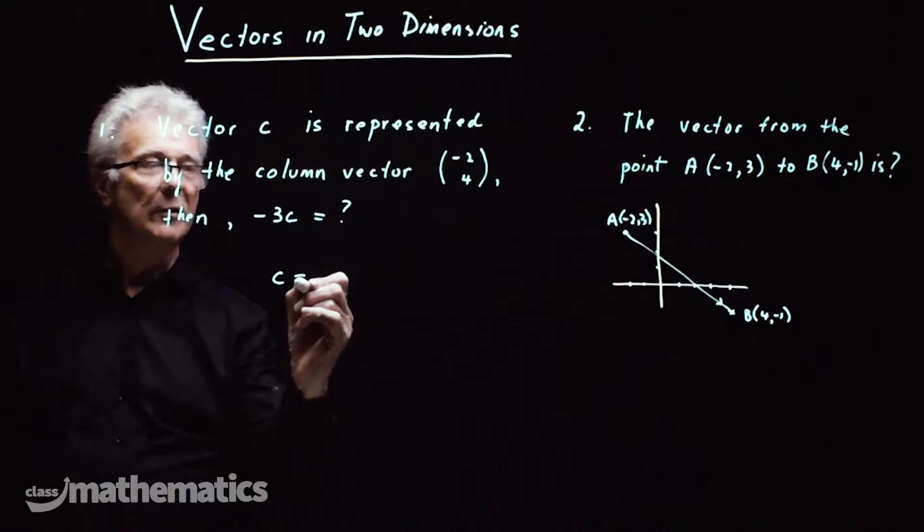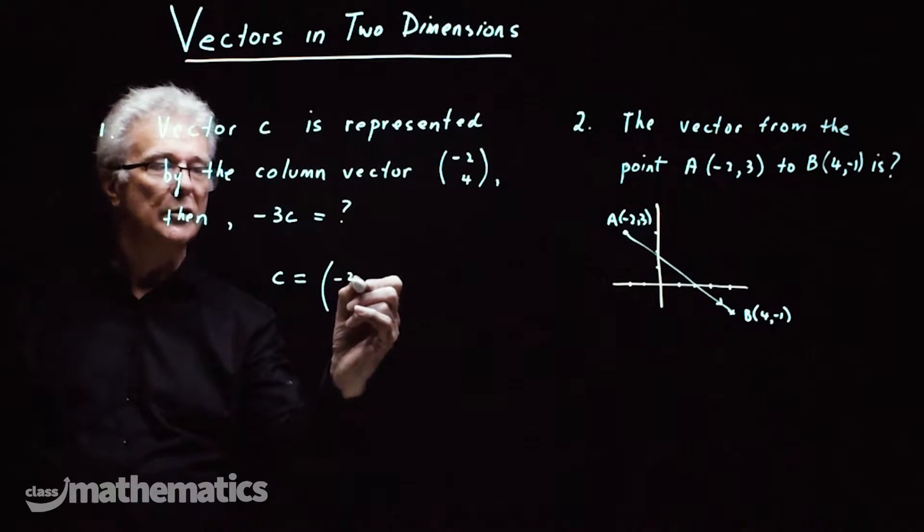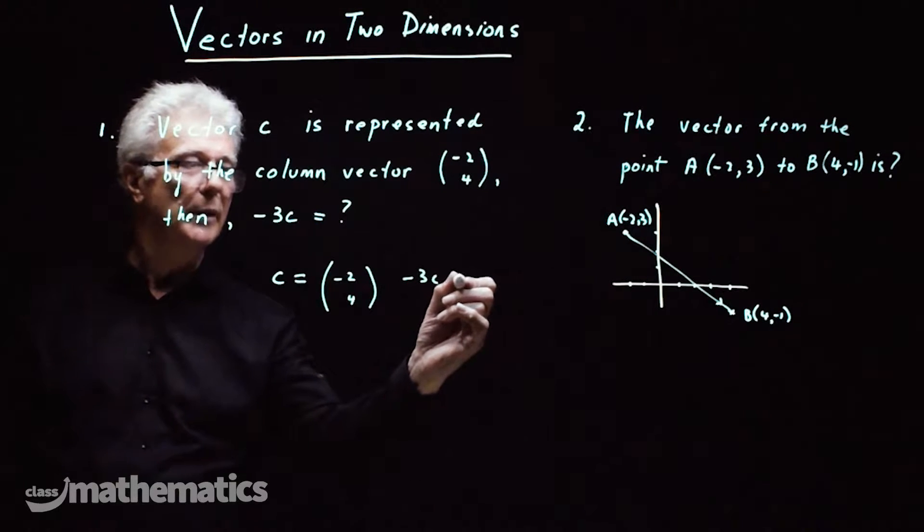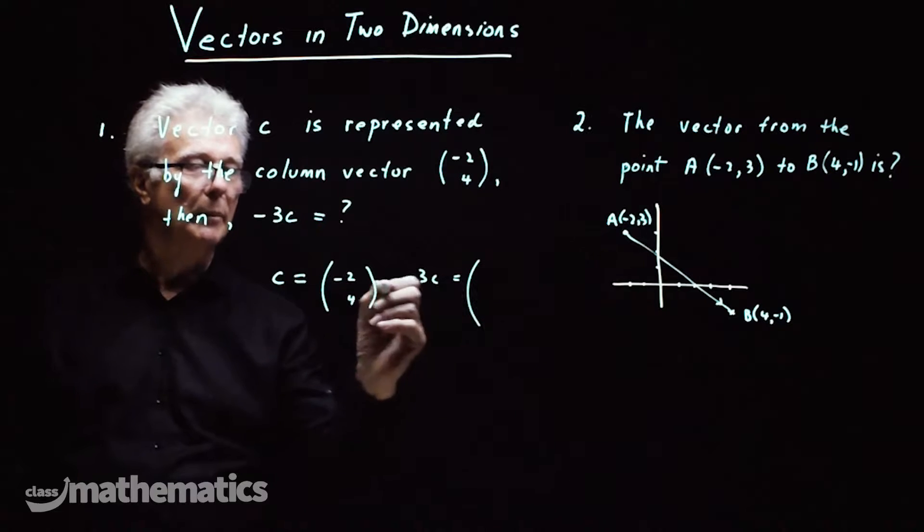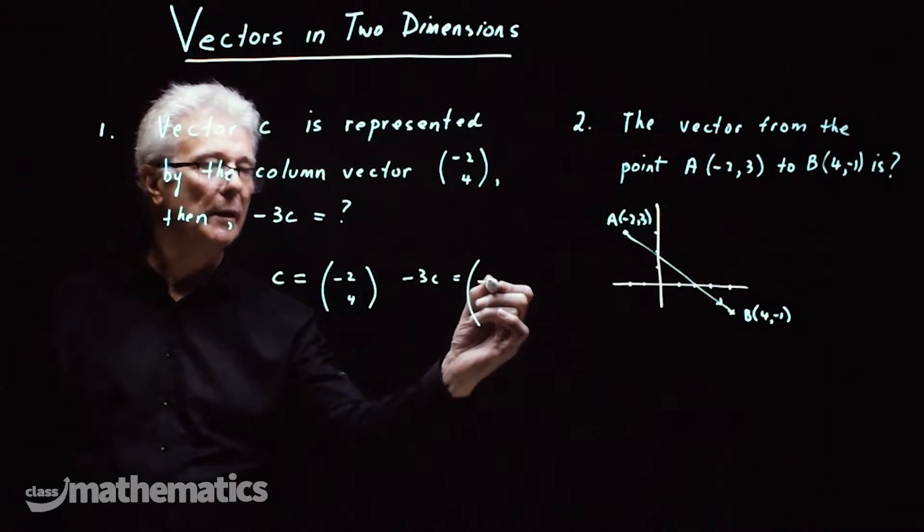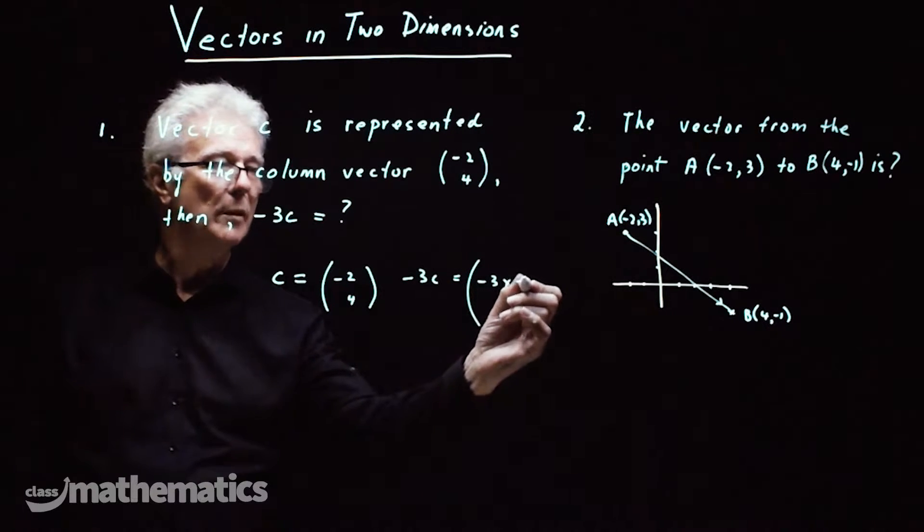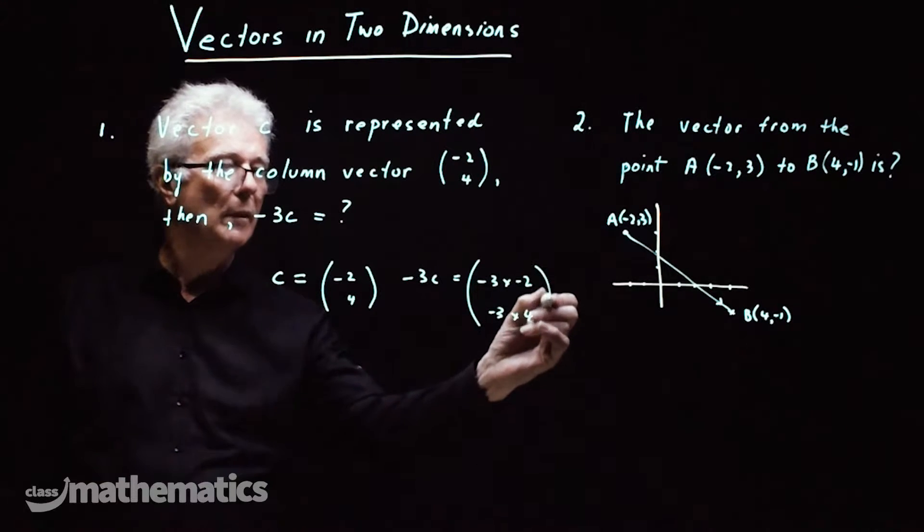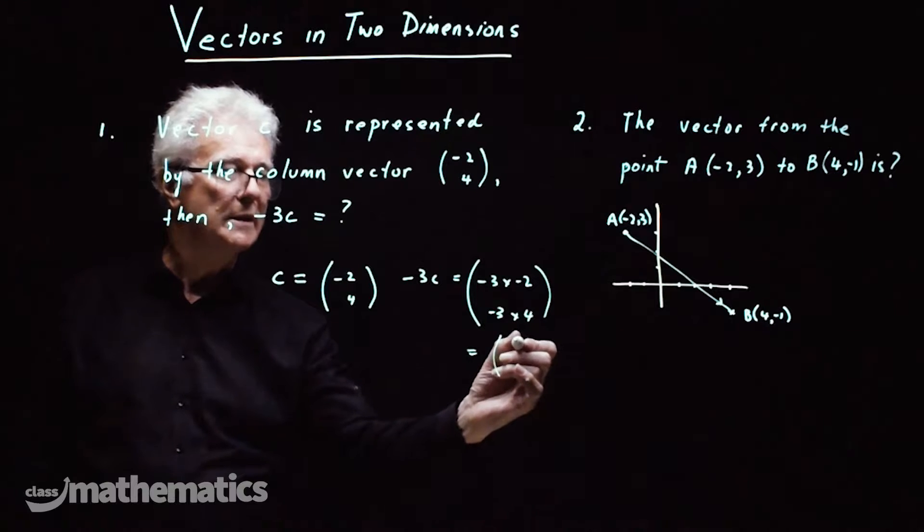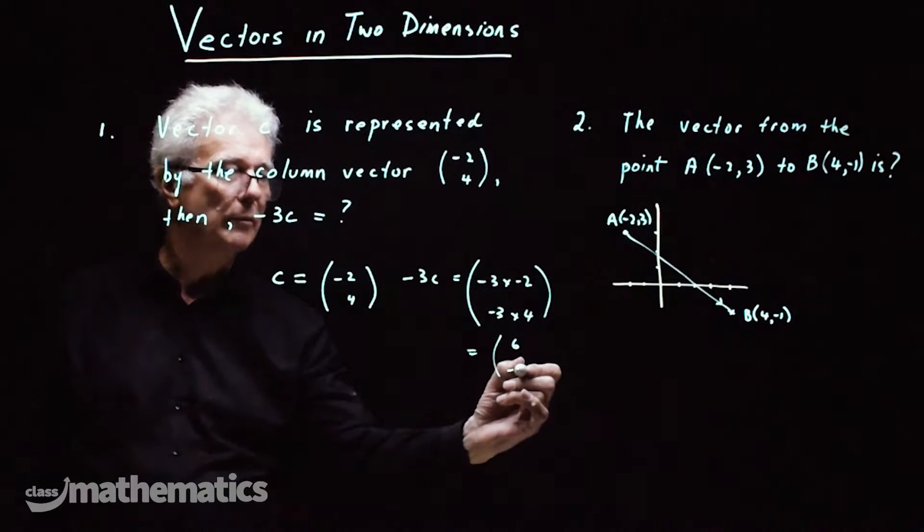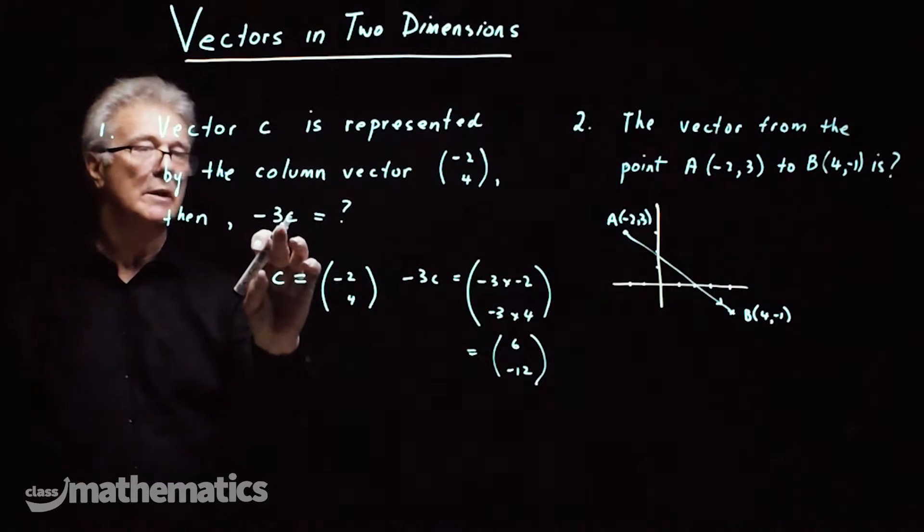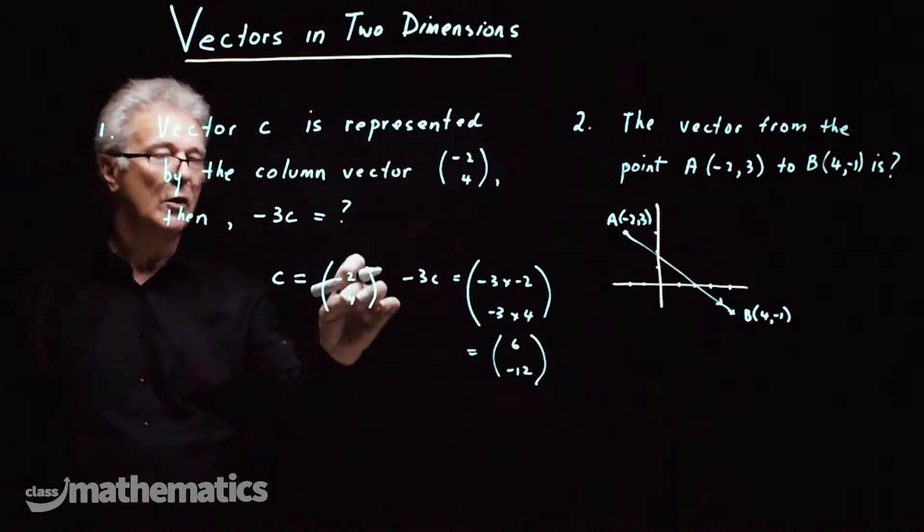So c is equal to minus 2, 4, minus 3c will be equal to, we simply multiply each one by minus 3, minus 3 times minus 2 and minus 3 times the 4 and that gives me 6 minus 12. That's your column vector. Just multiplying by a scalar, just multiply inside the column vector.